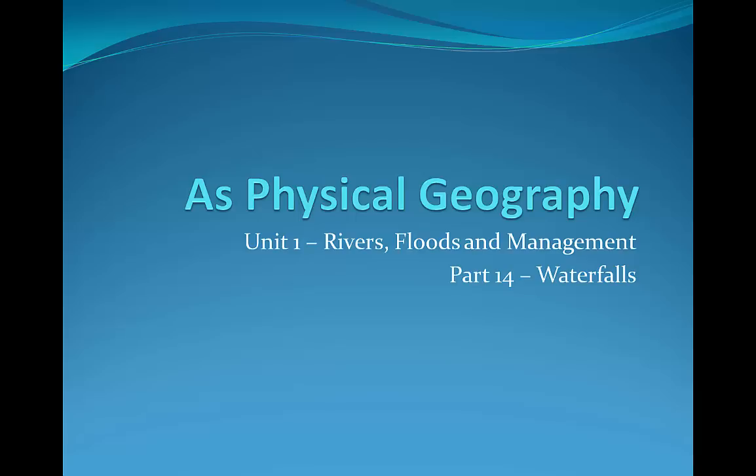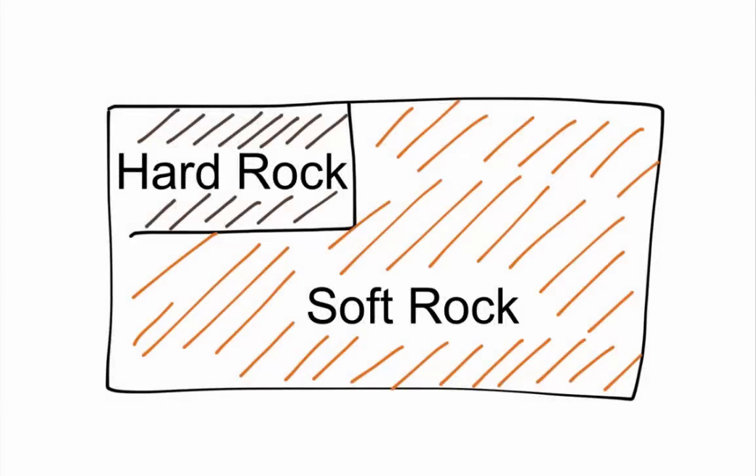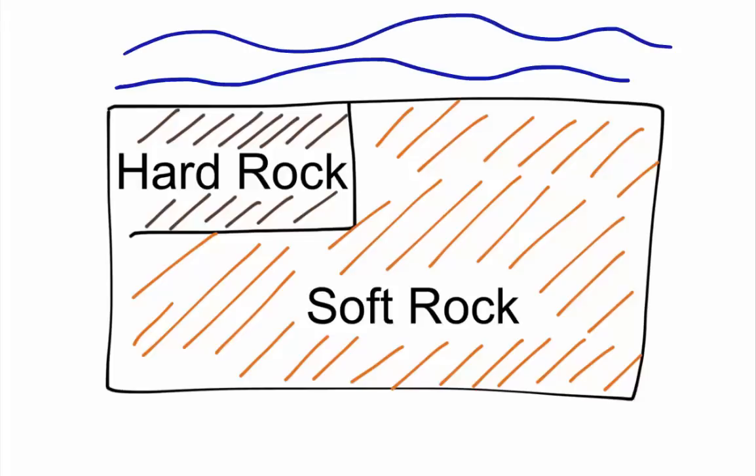So this is how a waterfall is going to form. A waterfall forms when there's a sudden change in the gradient of the river. Now what you can see now is a cross profile of the river bed. Normally, this is where the water will run. It's going to run on top of the bed, and the bed is this part here.